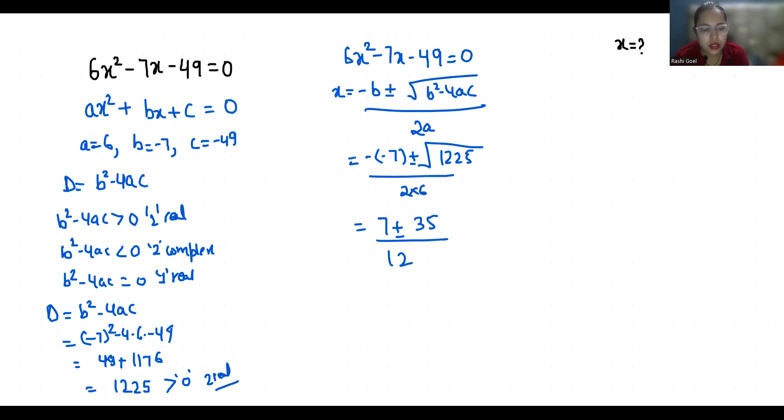So x₁ is 7 plus 35 by 12, and x₂ is 7 minus 35 by 12. So 7 plus 35 is 42 by 12.